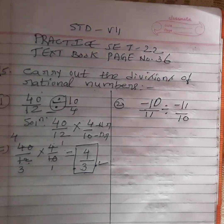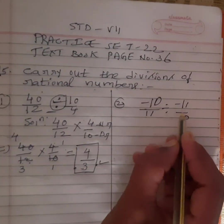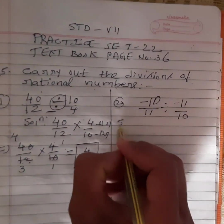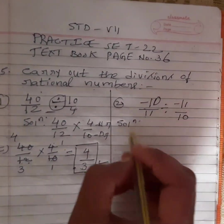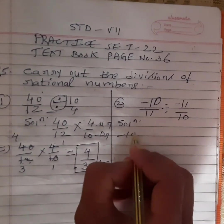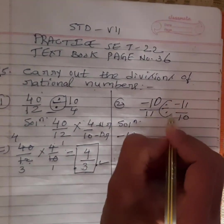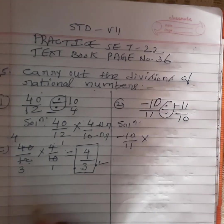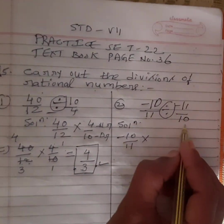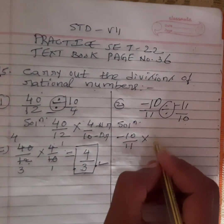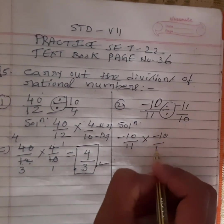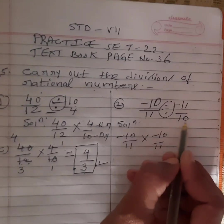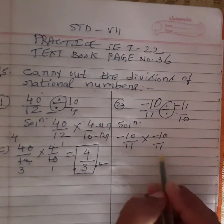Next question: minus 10 by 11 divided by minus 11 by 10 is the question. So we have to solve this. We will write the solution. We will take minus 10 by 11. The division symbol will become multiplication when we are simplifying this sum. Minus 11 by 10 will become its reciprocal, minus 10 by 11.